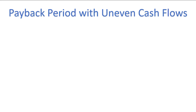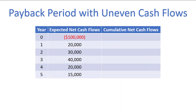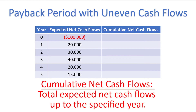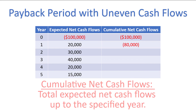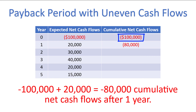Now, sometimes the cash flows change from year to year. Let's consider a similar example with a $100,000 investment, but instead of $25,000 in cash flow per year, we have the following schedule of cash flows. We need to calculate the cumulative net cash flows, which is the total cash flow up to the specified year. In year 0, when the investment is purchased, the company has a negative $100,000 net cash flow and cumulative net cash flow. After the first year, they have earned $20,000 through the use of the asset, bringing the cumulative net cash flows to negative $80,000, found by taking negative $100,000 and adding $20,000.